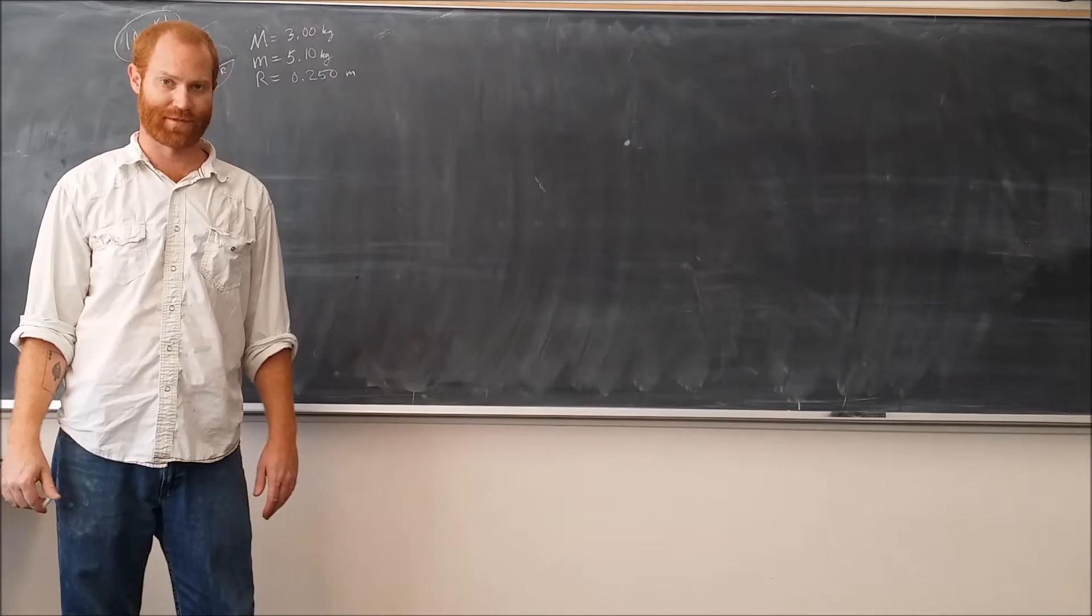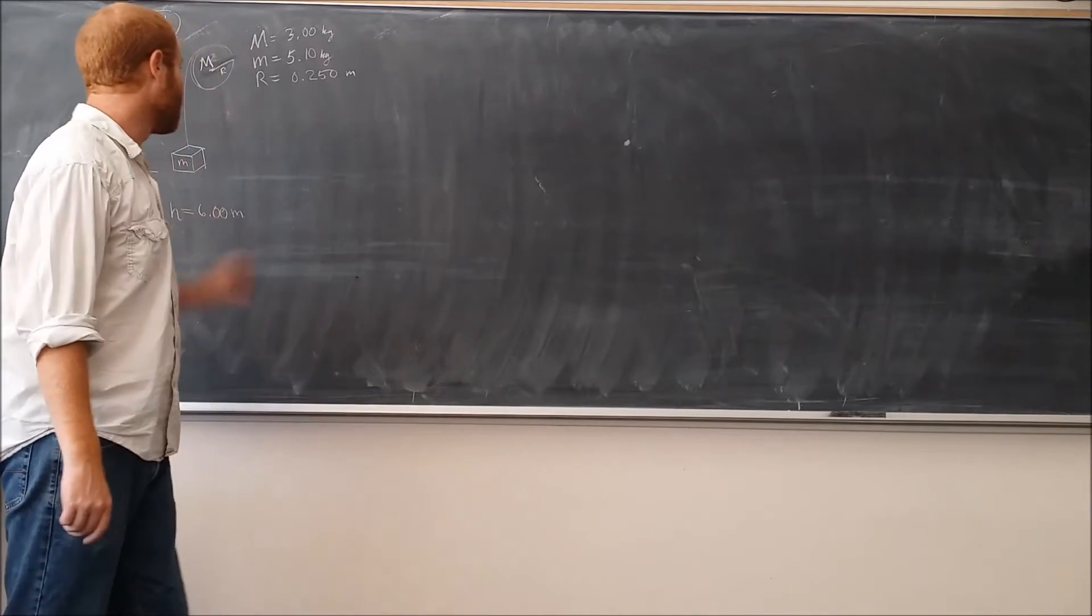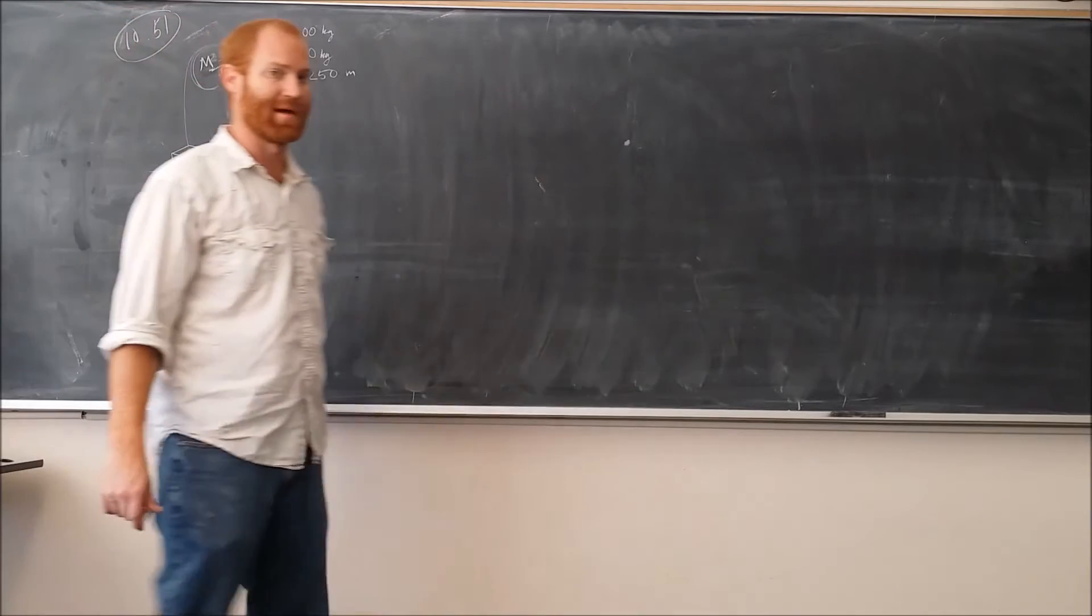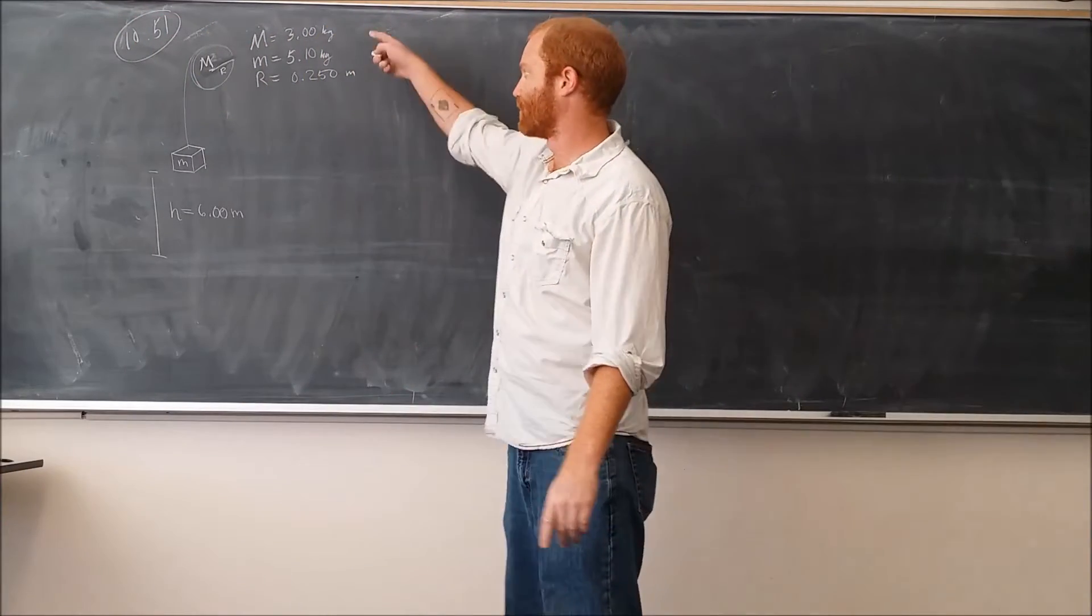We're going to do problem number 51 from chapter 10. In this problem we have a pulley here with a mass big M, and a little box here with a mass little m, and the values are given right here.